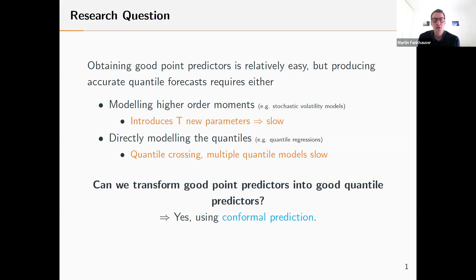My paper is called Conformal Quantile Estimation in Economics. The basic idea is simple: in a lot of economic forecasting problems, obtaining good point predictors is relatively easy, meaning even simple models can produce quite accurate point predictors in a mean squared error sense. But producing accurate quantile forecasts or density forecasts requires more complex modeling, like modeling higher order moments in stochastic volatility models, which makes them slow. Can we use these simple point predictors from fast models and transform them into good quantile predictions? The answer is yes, by using one-sided conformal predictors as quantile estimators.